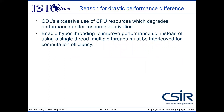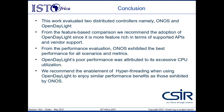We believe the reason for this drastic performance difference between ONOS and Open Daylight may be a result of Open Daylight's excessively high CPU utilization, which is why performance severely degrades with Open Daylight. This means that in order to improve Open Daylight's performance, hyper-threading has to be enabled — in other words, multiple threads must be used instead of a single thread to improve computational efficiency. In conclusion, this work evaluated two distributed SDN controllers, namely ONOS and Open Daylight. From the feature-based comparison, we recommend the adoption of Open Daylight since it is more feature-rich in terms of supported southbound interfaces and vendor support. From the performance evaluation, we recommend ONOS because it exhibited the best performance for all scenarios and metrics.